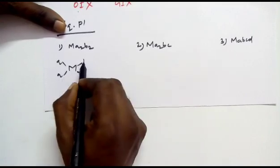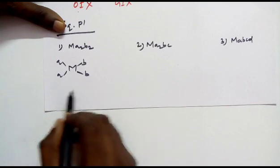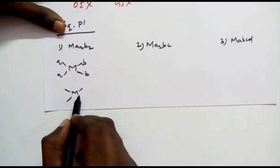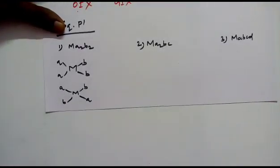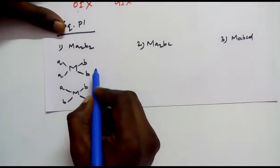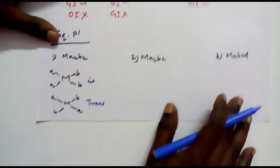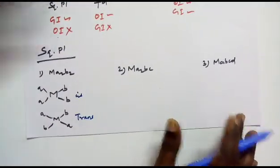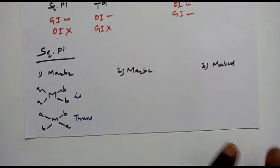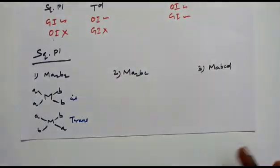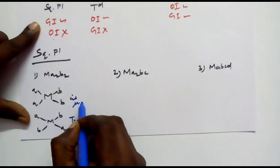For the MA₂B₂ type, we can draw two arrangements. In the first: A and B are adjacent (cis), and in the second: A and A are opposite to each other and B and B are opposite (trans). Experimentally they can be found out with the help of dipole moment measurements. If trans, dipole moment will be zero. If cis, dipole moment will not be zero.